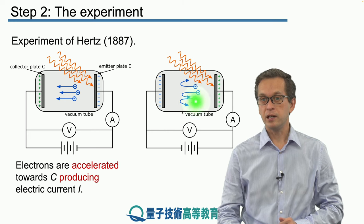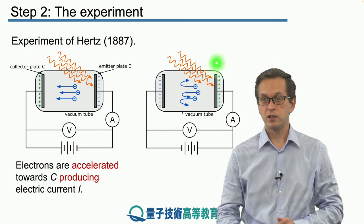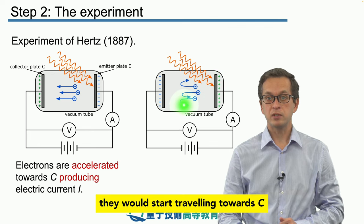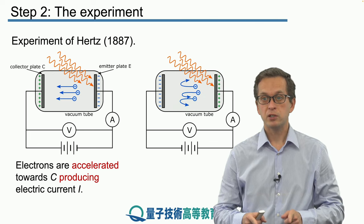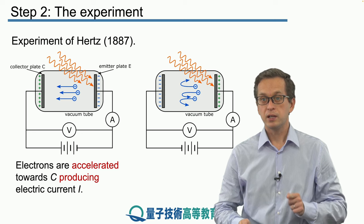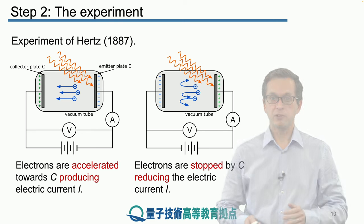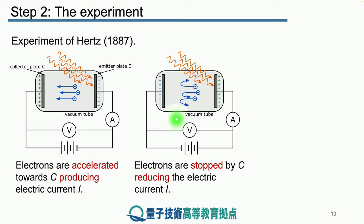Meaning that the electrons which were still being ejected from the emitter plate, they would start travelling towards E, but due to the negative charge on the collector plate they would be stopped. This had the effect of decreasing the current measured by A.